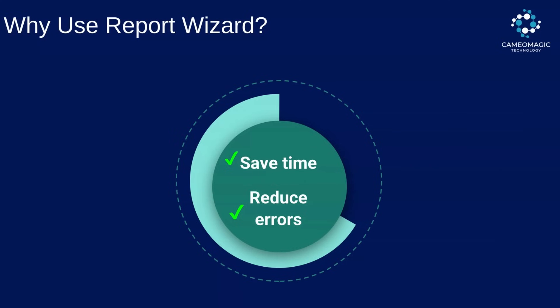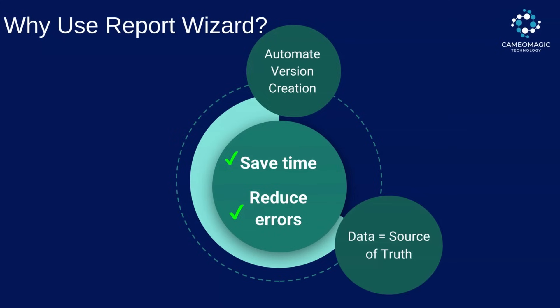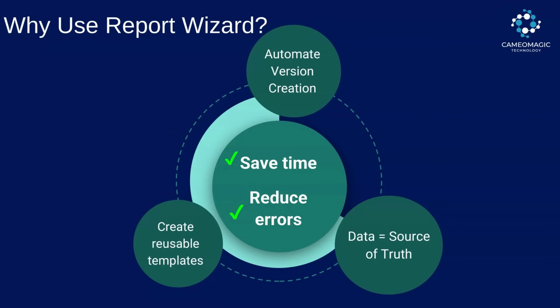Report Wizard provides three primary advantages. First, it enables automated version creation. If data is updated in the model, it can be used to regenerate a version of the document that reflects these changes. Second, whether initial release or Rev-Z, you can be assured that your data reflects the source of truth and that copying errors will not plague your customer deliveries. Most importantly, you can use reusable templates to standardize and expedite specification creation across subsystems, systems, and your entire organization, greatly reducing the amount of time spent on report generation.